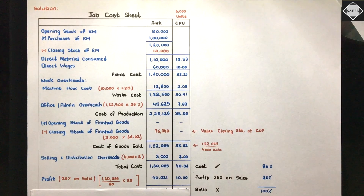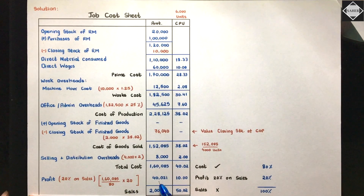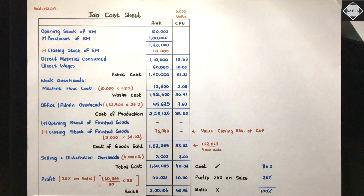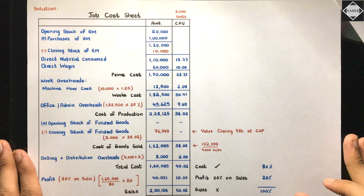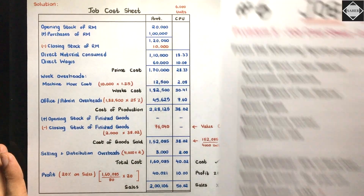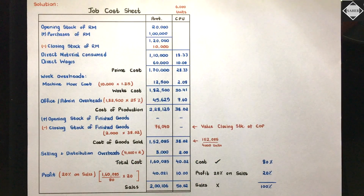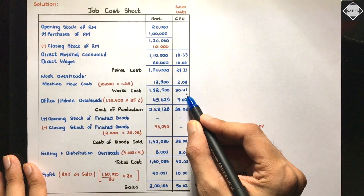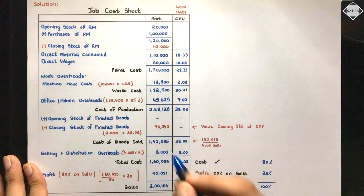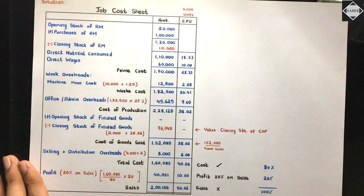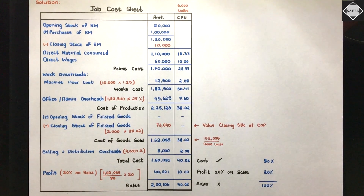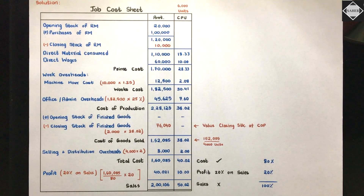Sales equals total cost plus profit: 1,60,085 plus 40,021 equals 2,00,106. CPU for sales: 40.02 plus 10 equals 50.02. This was the complete solution. Take the screenshot now. The answer may vary slightly depending on whether you used 38.01 or 38.02 — a small approximation difference in closing stock and profit is fine. Also take the screenshot of the format.